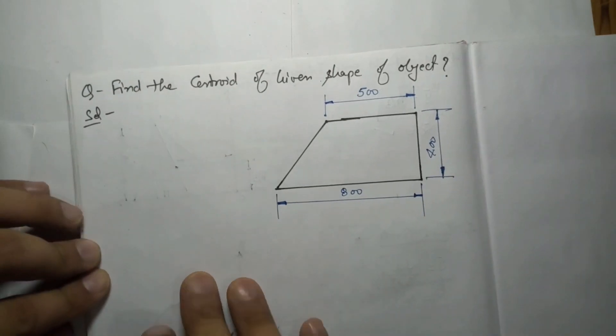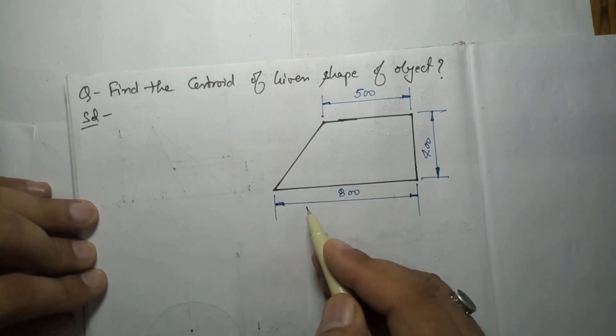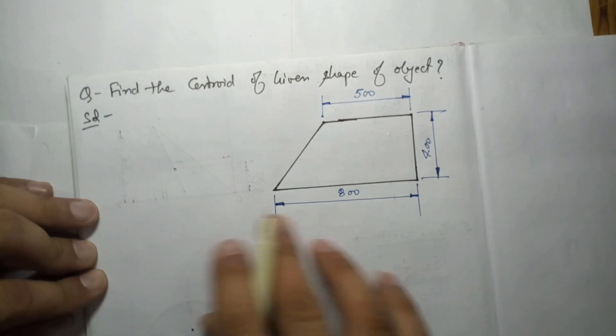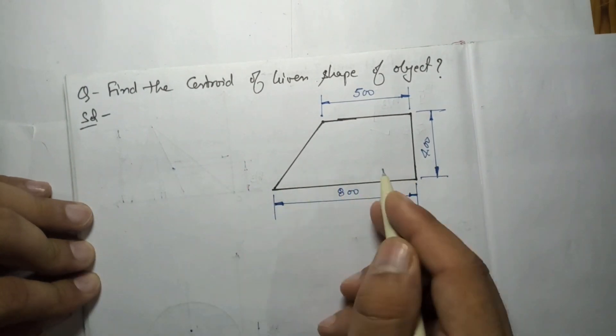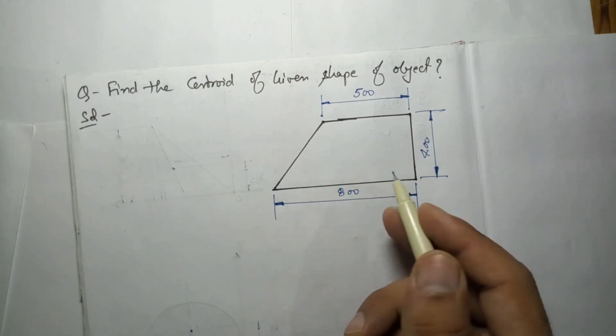Now we will solve one question which is based on centroid. The question says to find out the centroid of this shape. The dimensions given are 800, 400, and 500. No origin is given, we have to solve this question. We cannot solve this question as a single object, we have to divide it into few surfaces.